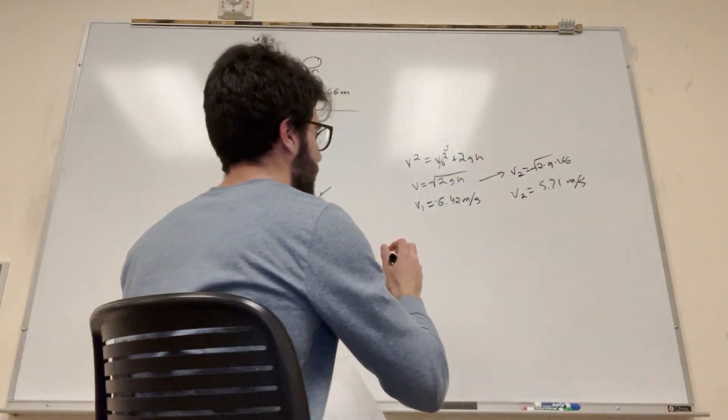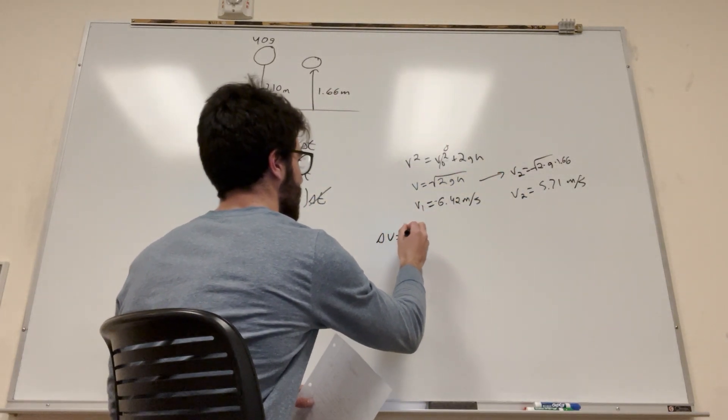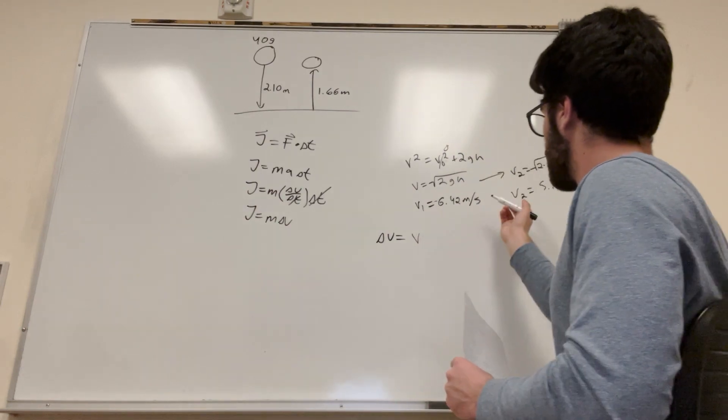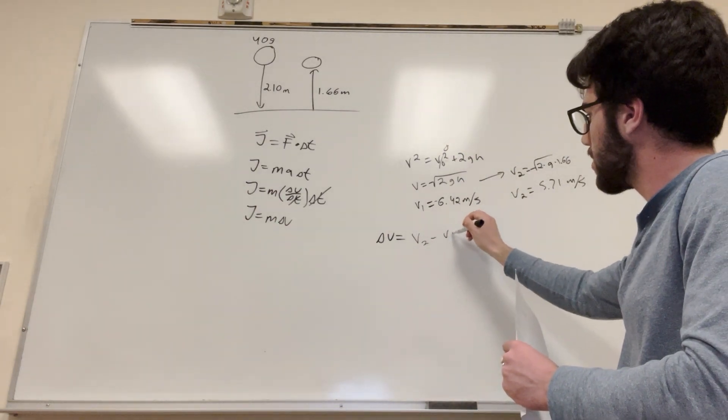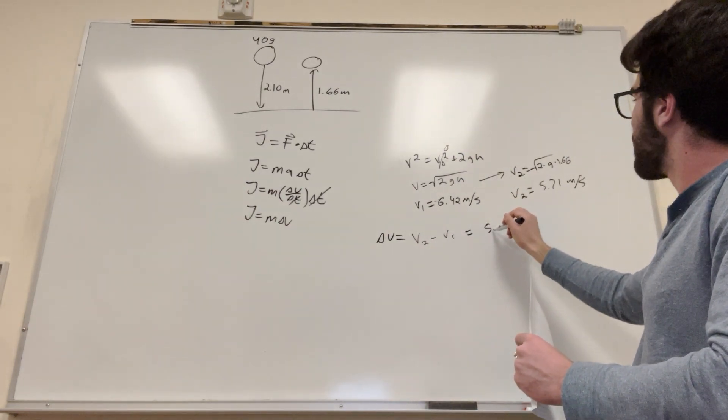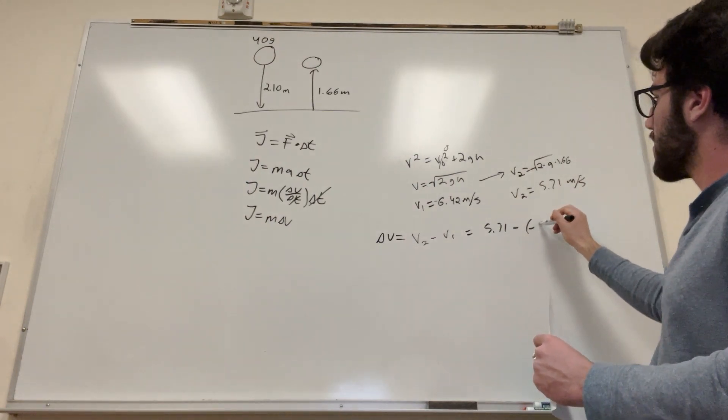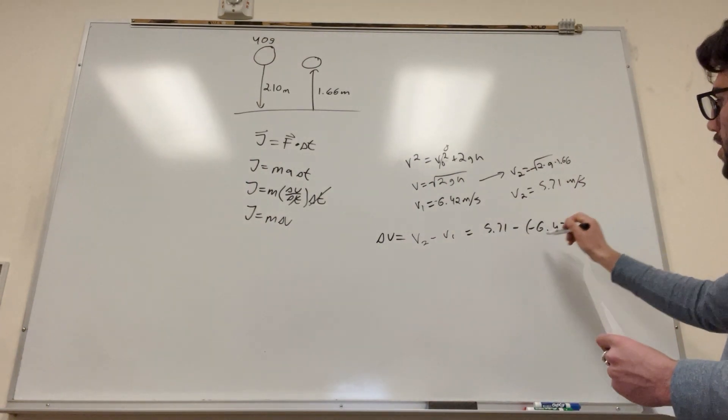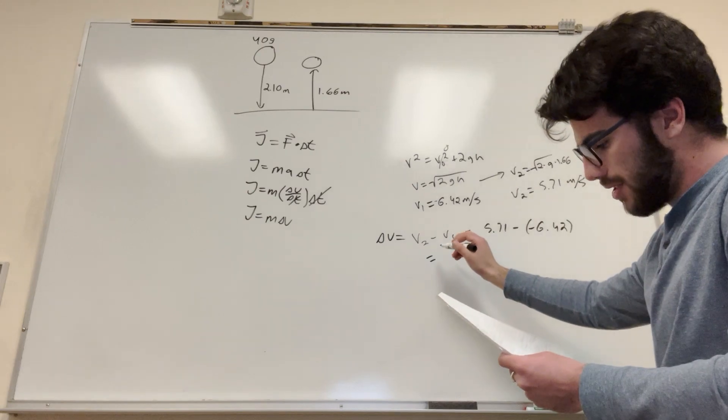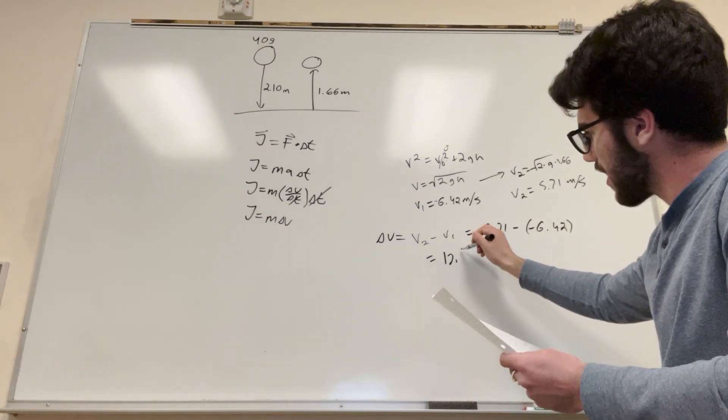Okay, so then we can find the change in velocity. Delta v is equal to velocity final, which would be velocity 2 minus velocity 1, which is equal to 5.71 minus negative 6.42, which this is equal to 12.1 meters a second.